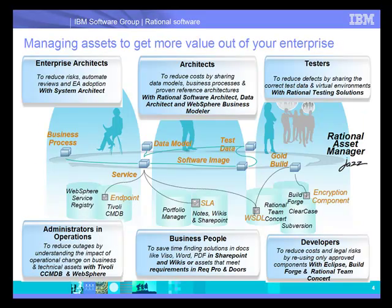Some examples of assets are shown here, and in today's demonstration I'll show you some of these new capabilities in RAM. Assets really span across multiple roles in the organization — things like business processes, data models, test data, virtual images, and gold releases of builds.